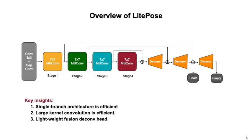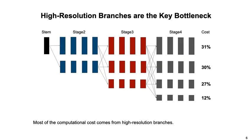LightPOS is an efficient single-branch architecture including two key improvements: the large kernel convolution and the fusion deconv head. First, we explain why we choose the single-branch architecture instead of the multi-branch architecture as used in the state-of-the-art HRNet family.